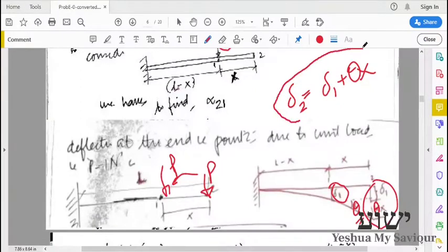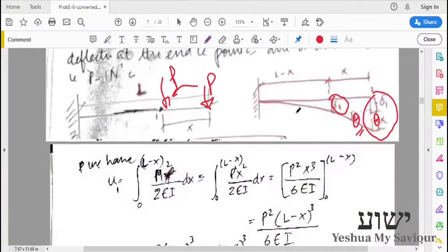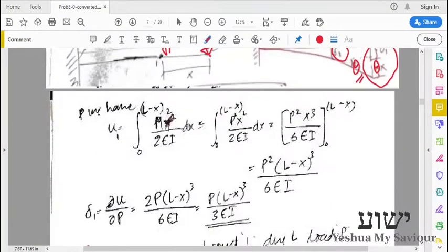After finding this out, we can find out the influence number. So for that, what we do is we use strain energy method.